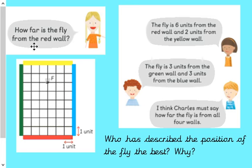Well, the question was asking how far was the fly from the red wall? Now, the only one of these that's mentioned the red wall is the young lady at the beginning. She said the fly is six units from the red wall and two from the yellow wall. This young man here has said that the fly is three from the green wall and three from the blue wall. Now, he's quite right. He's quite right that the fly is three squares from each of those two walls, but that doesn't tell us how far from the red wall. The young man at the bottom here says he must say how far the fly is from all four walls. Well, no, he doesn't. The question was how far from the red wall? And the only one that addresses that is this young lady at the top here.